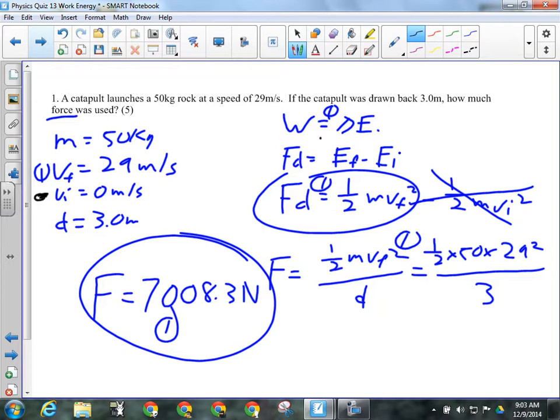Now, what we have to recognize here is that when sitting in the catapult, the rock doesn't have any energy. So its initial kinetic energy is zero. That means that force times distance equals one half mvf squared. If they had something like that, you can give them another mark. We have to manipulate for how much force was used, which means we divide both sides by d.